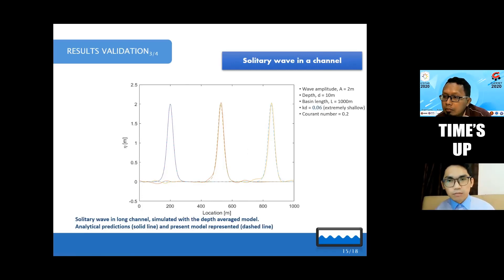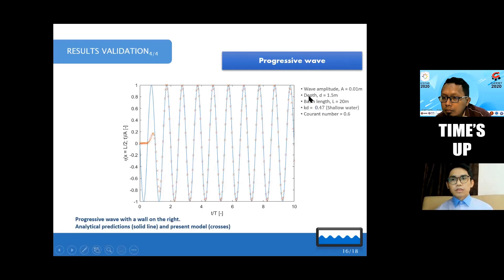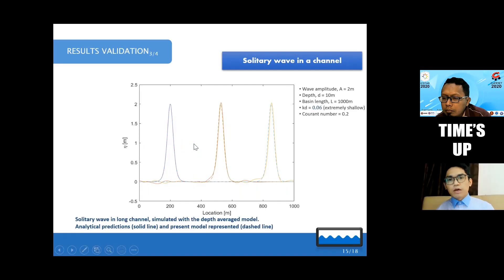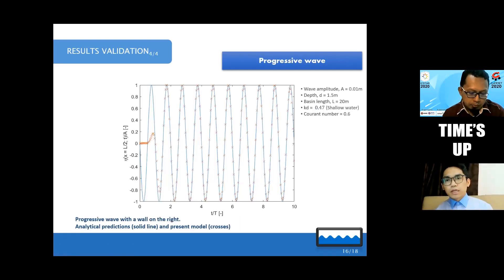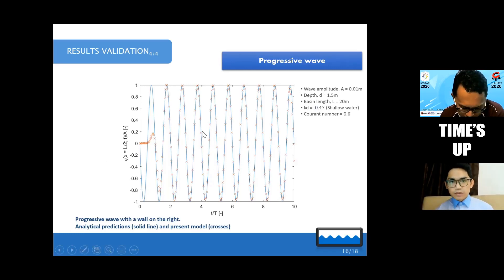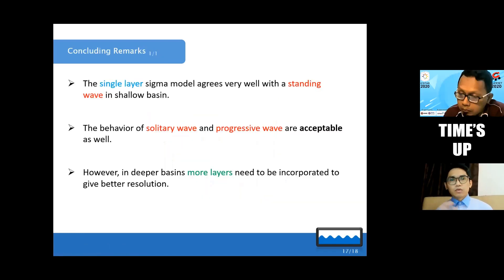The depth of this tank is 10 meters. Then we have the progressive wave, meaning we have many waves — a large number of waves. You can see here the results are also matching.